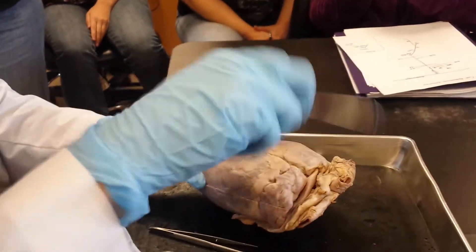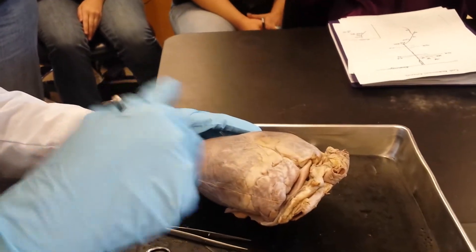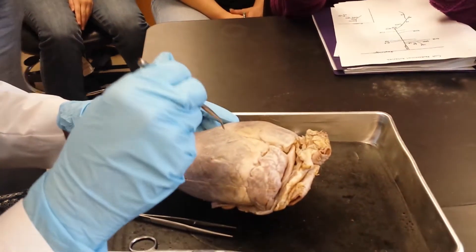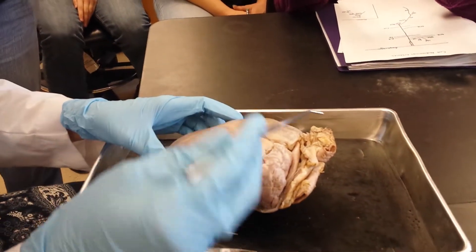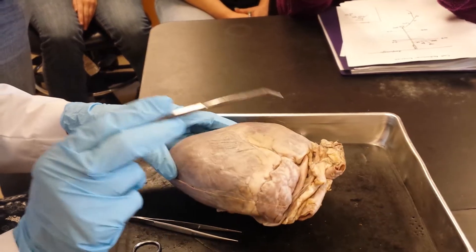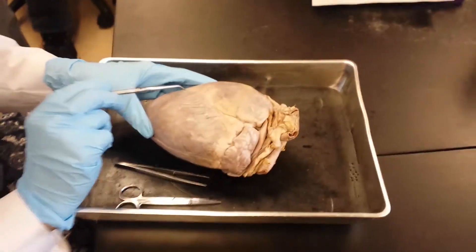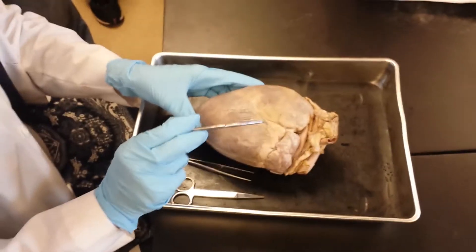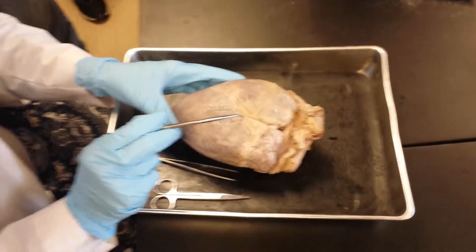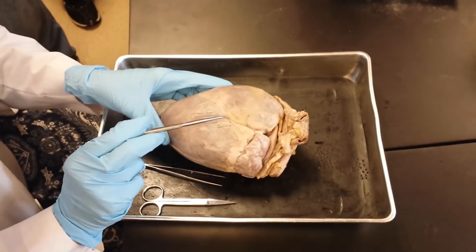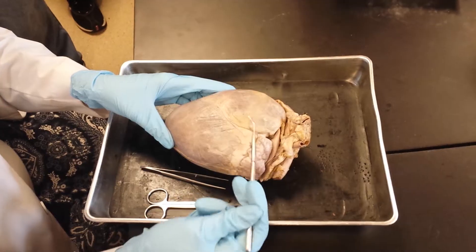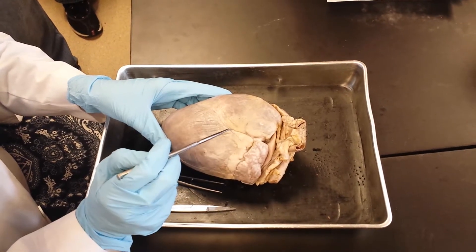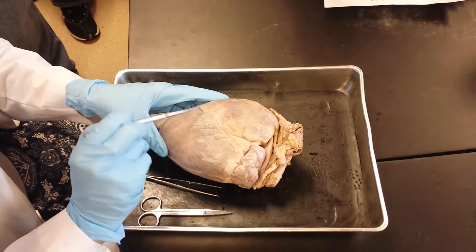We're going to do the external anatomy of the heart first and then we'll go to the inside. Looking at the front — this is the anterior. The very first thing you see across the front is this diagonal line. That's the anterior interventricular sulcus. Sulcus is a groove, and since it's on the anterior side or the front, we call it the anterior interventricular sulcus.